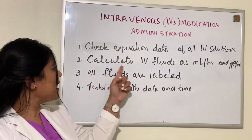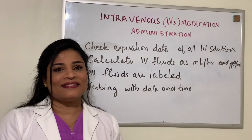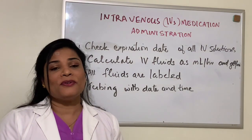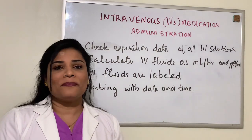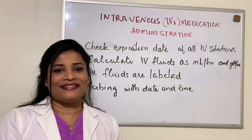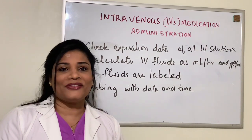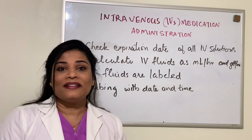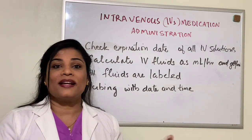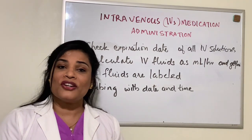The second step is to calculate the IV fluid as ml per hour and drops per minute. In our hospitals there are different types of pumps which help you program based on the dose prescribed by the physician. However, in remote areas — for example, during this pandemic, some hospitals don't have enough pumps and some patients are admitted outside the hospital in different remote areas.